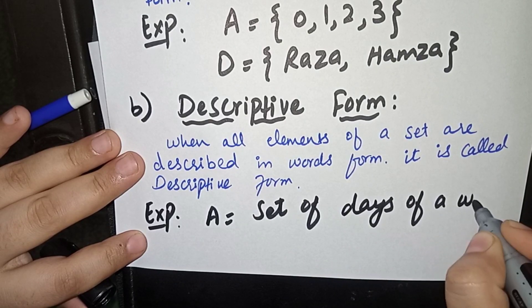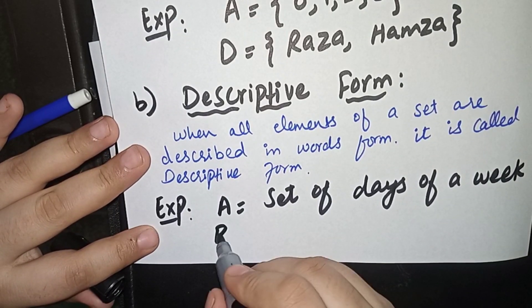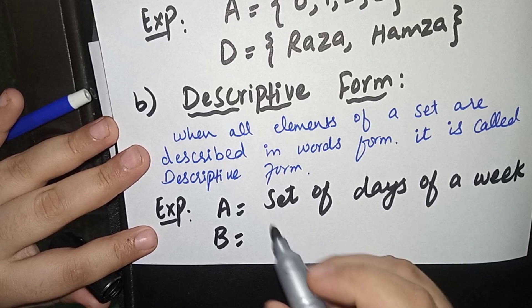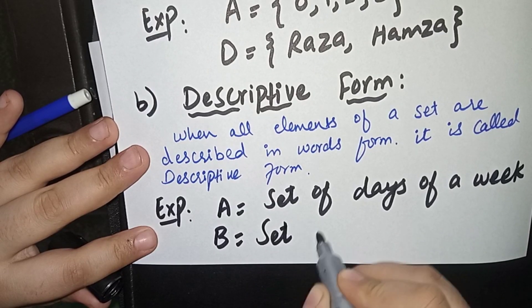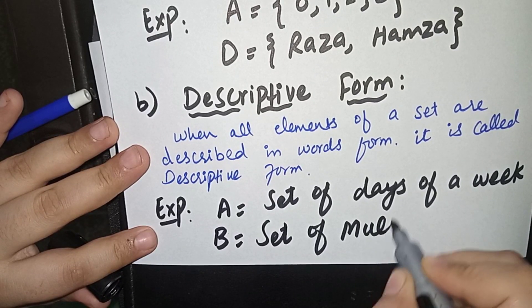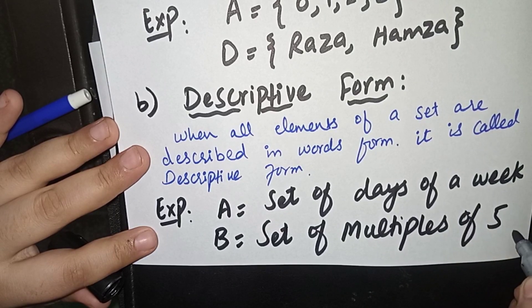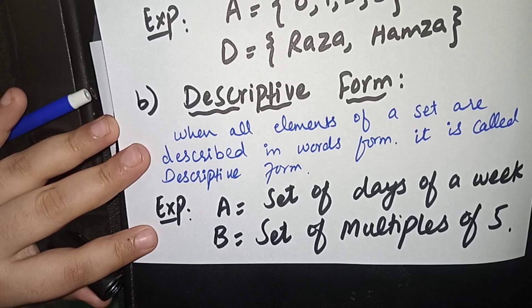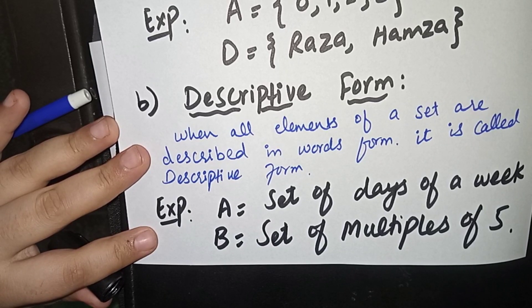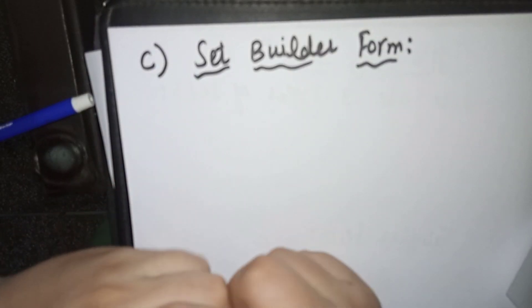Here is an example: A = set of days of a week. You can see that we do not write curly brackets here — instead we use the word 'set' and describe it in words. A second example is B = set of multiples of five. A type of set in which we denote all elements in word form is called descriptive form.